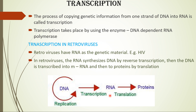In retroviruses, RNA synthesizes DNA. In HIV, the RNA is the genetic material, and when entering the human body, this RNA is reverse transcribed into DNA. This process of RNA synthesizing DNA is called reverse transcription. Then the DNA is once again transcribed into mRNA, and viral proteins are produced. The process of RNA being converted into protein is called translation.